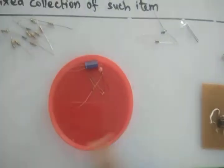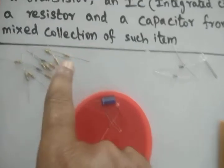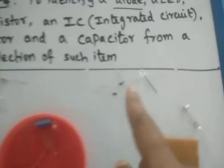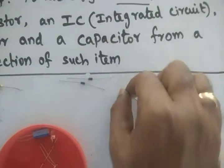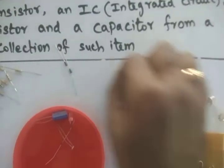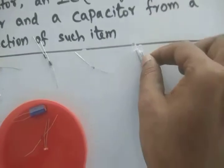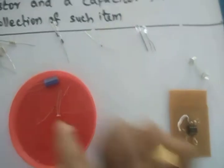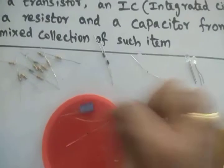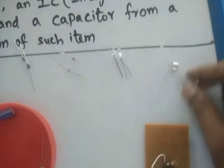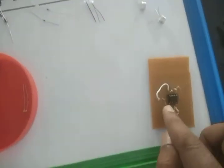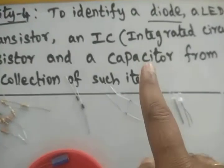From the given mixture of components, I will separate them. We separate the resistors, then the diodes — there are two types: PN diodes and the Zener diode. Then LED — two pieces are given. Again we have Zener diodes — two pieces. Then two transistors and one IC chip.